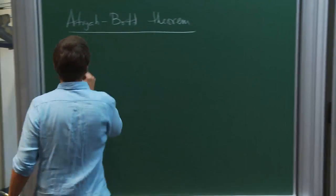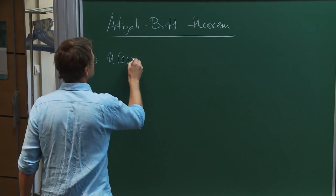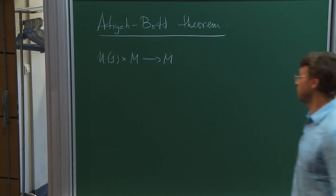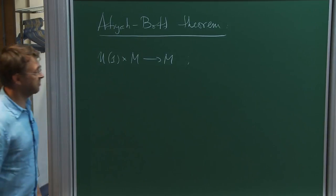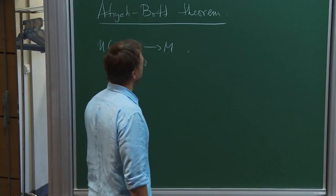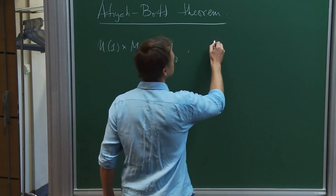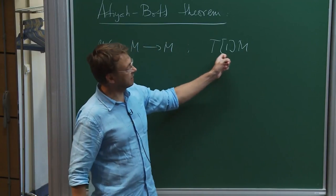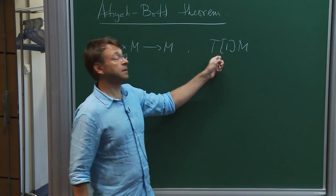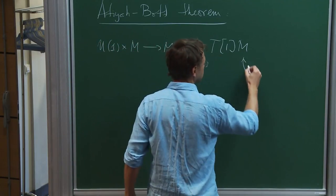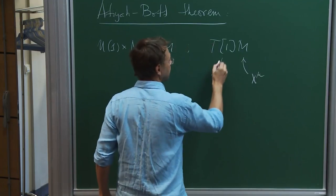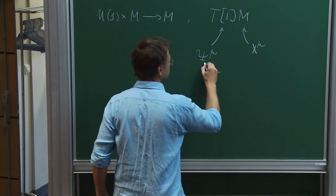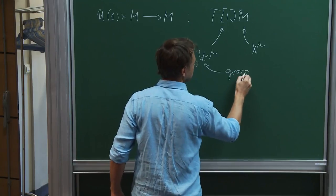Imagine I have a smooth manifold and a U(1) action. I'm a rather mathematically oriented person, so I would like to associate to this manifold what's called a supermanifold or graded manifold. What I do is take a tangent bundle and shift degree by one. So locally, if I have a coordinate x^μ, then here I will have ψ^μ, which is a Grassmannian variable.